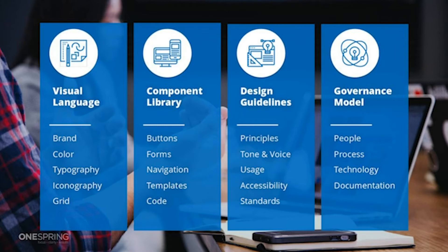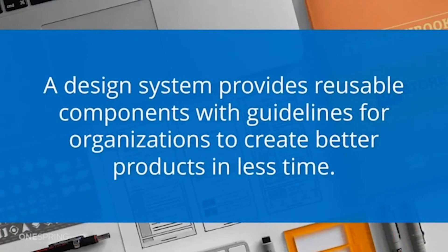What separates a design system from a UI kit or simple style guide is having the actual guidelines on how to implement that design and the governance that surrounds it. The design system ultimately gives you a collection or library of reusable components with guidelines for usage that help organizations create better products in less time.